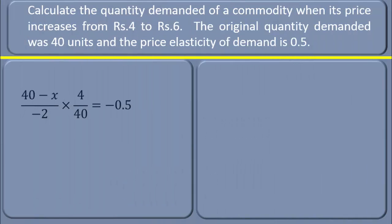Okay. We shall simplify this. Multiply 40 - x with 4: 160 - 4x. You have to multiply each term. Don't forget. Now, multiply -2 and 40: -80.